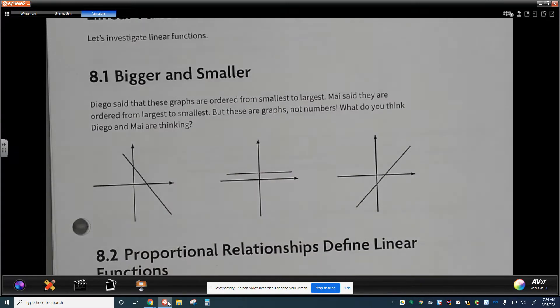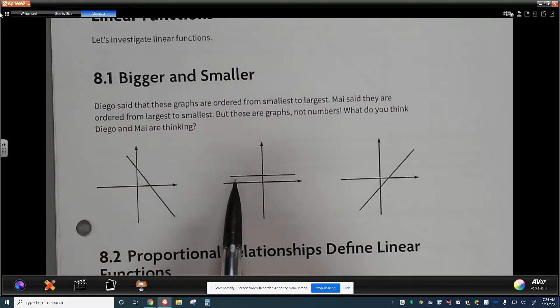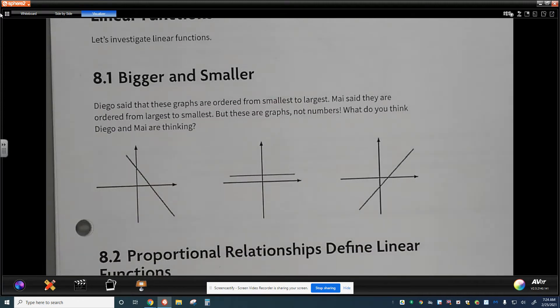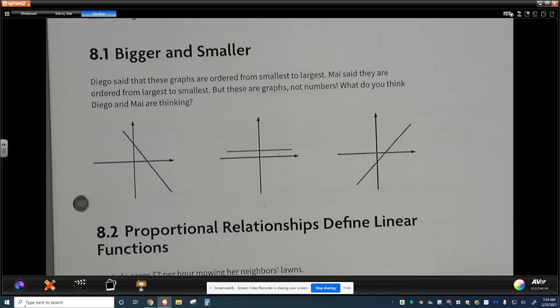Diego says that the graphs are ordered from smallest to largest. May says that they're ordered from largest to smallest. But these are graphs, not numbers. So what do you think? Do you agree with Diego or do you agree with May? I'd like for you to go ahead and go through that. My personal opinion, I could agree with either one, simply because of the direction that we're going. I see a graph that's decreasing and then staying at a flat line and then increasing. I think that there's a few other ways that we could also recognize this, but I'd like to know what you think. Go ahead and comment below about 8.1, who you think and why.